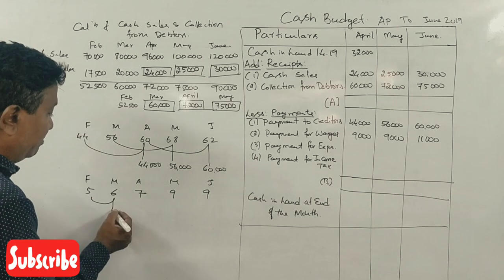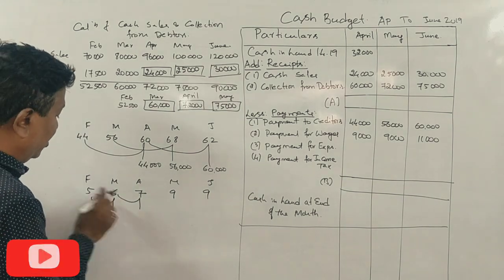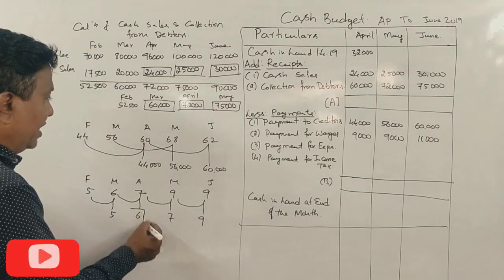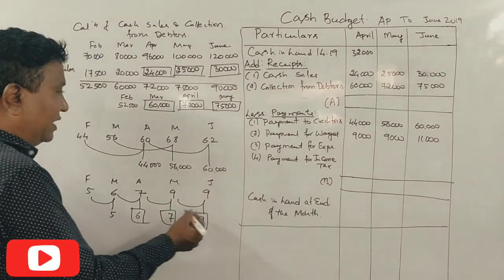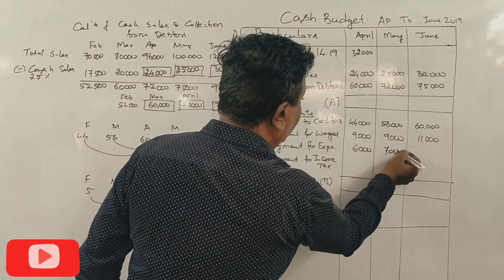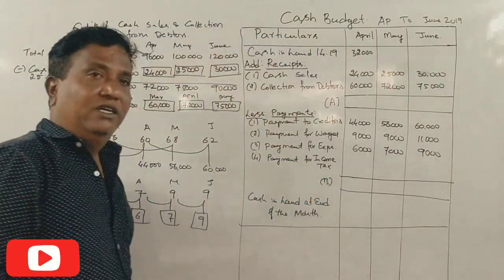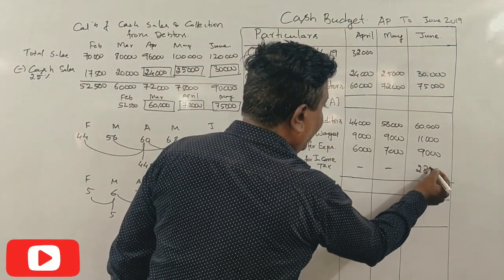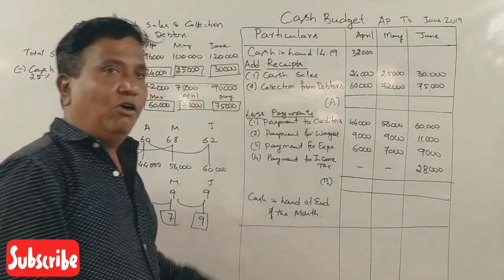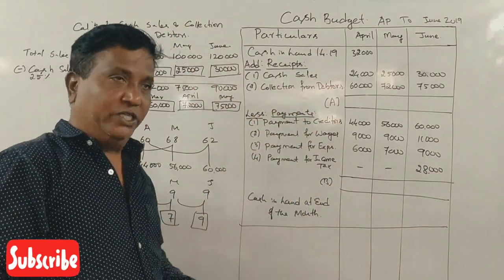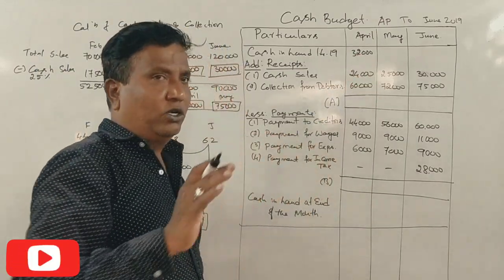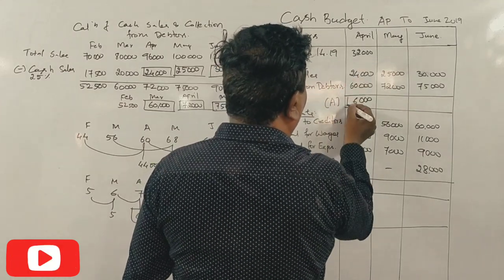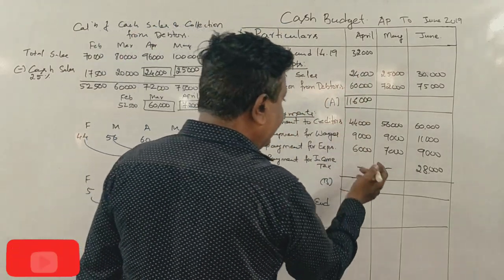For April, May, June: expenses are 6,000; 7,000; 9,000. Income tax is 28,000, payable in June. We now have all adjustments. Total receipts amount to 1,16,000. Then we calculate total payments. The closing balance in April is 57,000, which becomes the opening balance for May.